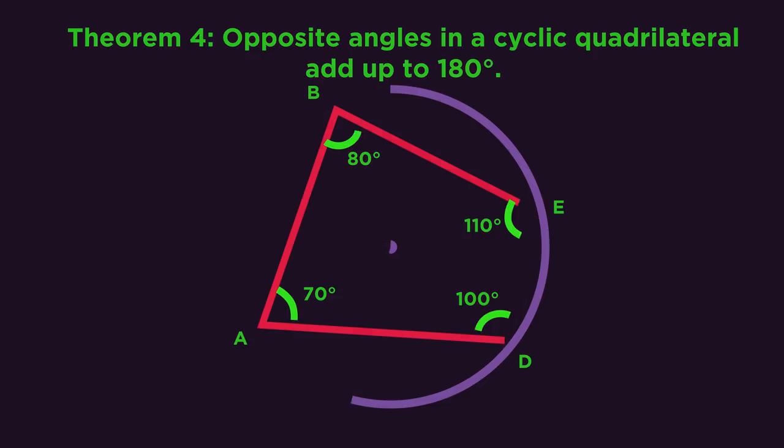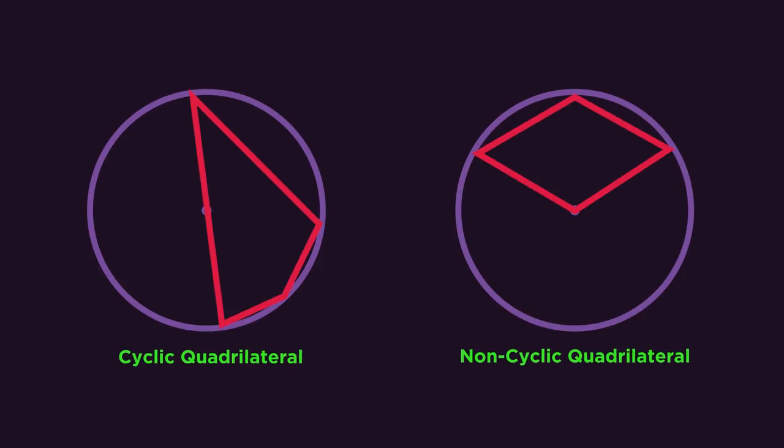And the important part to remember is that all four sides must be touching the circumference for it to be a cyclic quadrilateral.